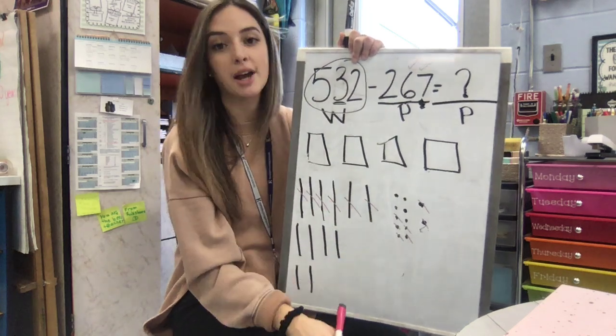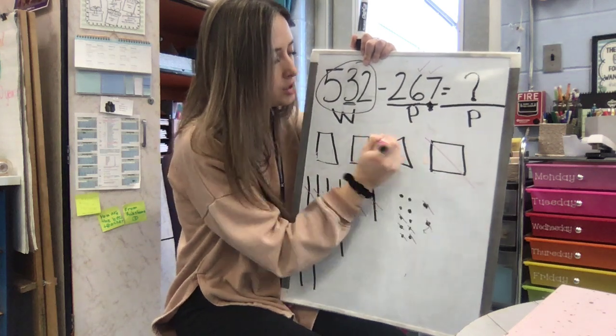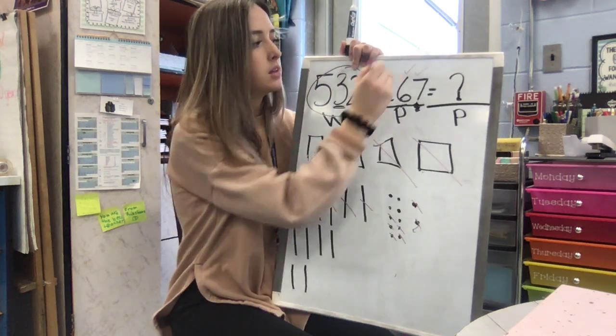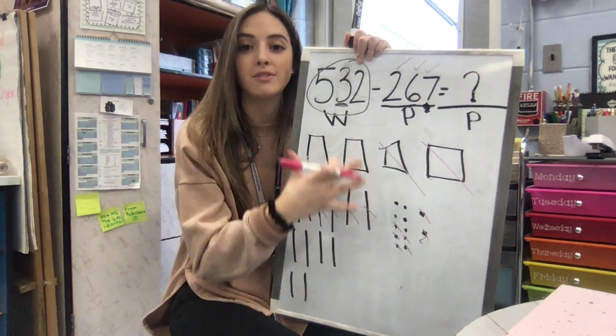Now I need to subtract my hundreds. I have two hundreds to subtract. So 100, 200. Check.